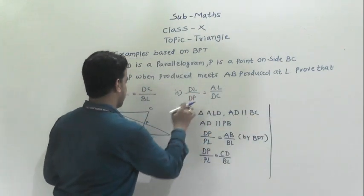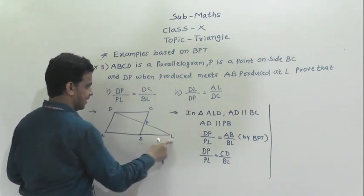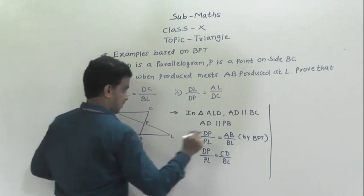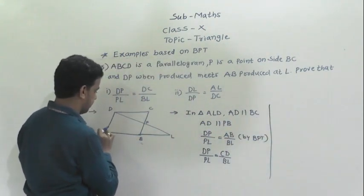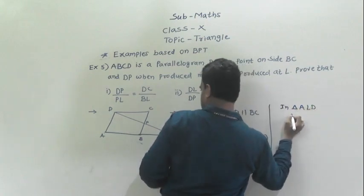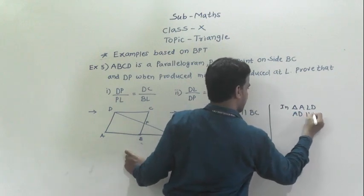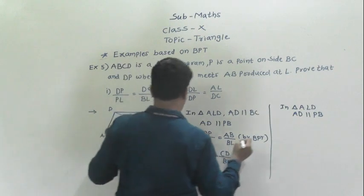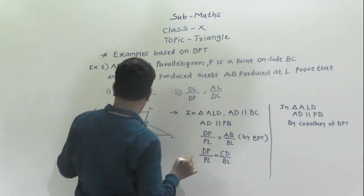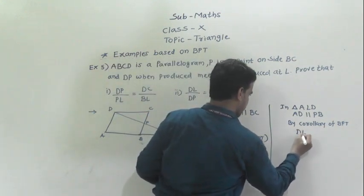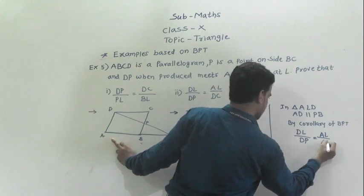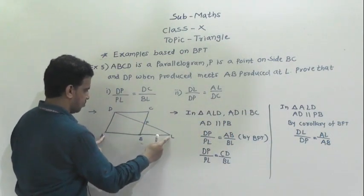For the second part, we want to prove DL by DP is equal to AL by DC. Again considering triangle ALD with AD parallel to PB, by the corollary of BPT we can write DL by DP is equal to AL by AB.